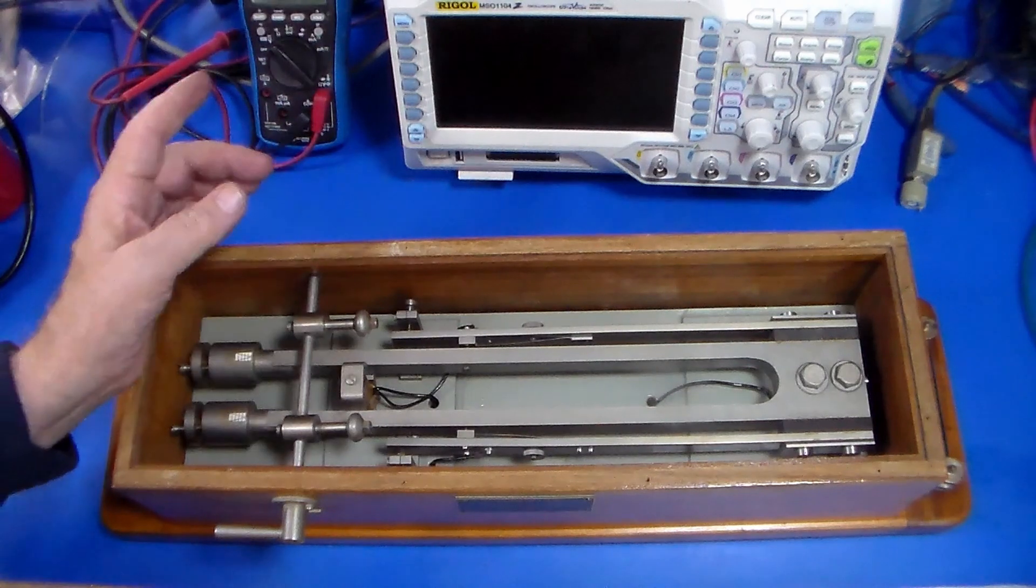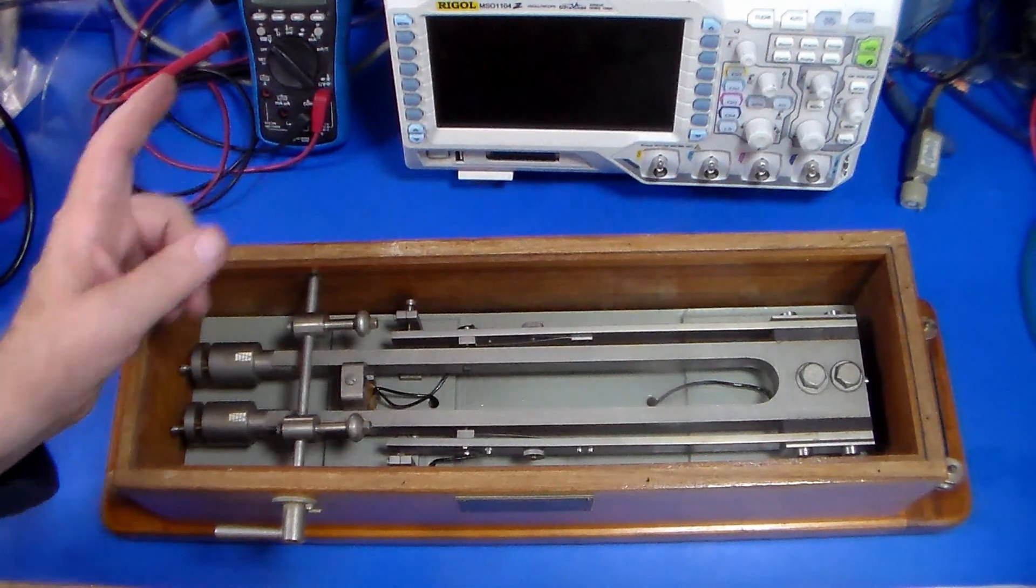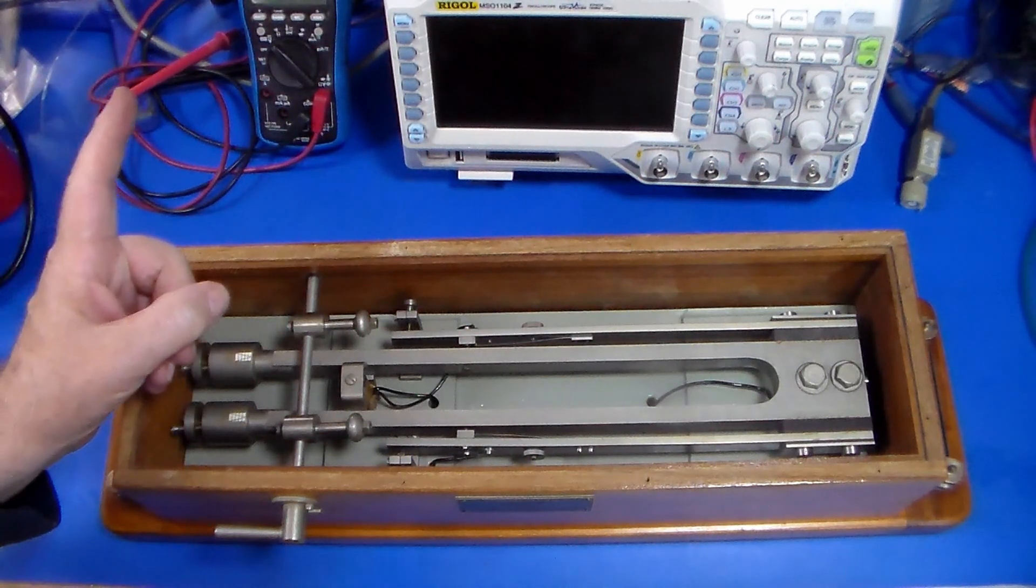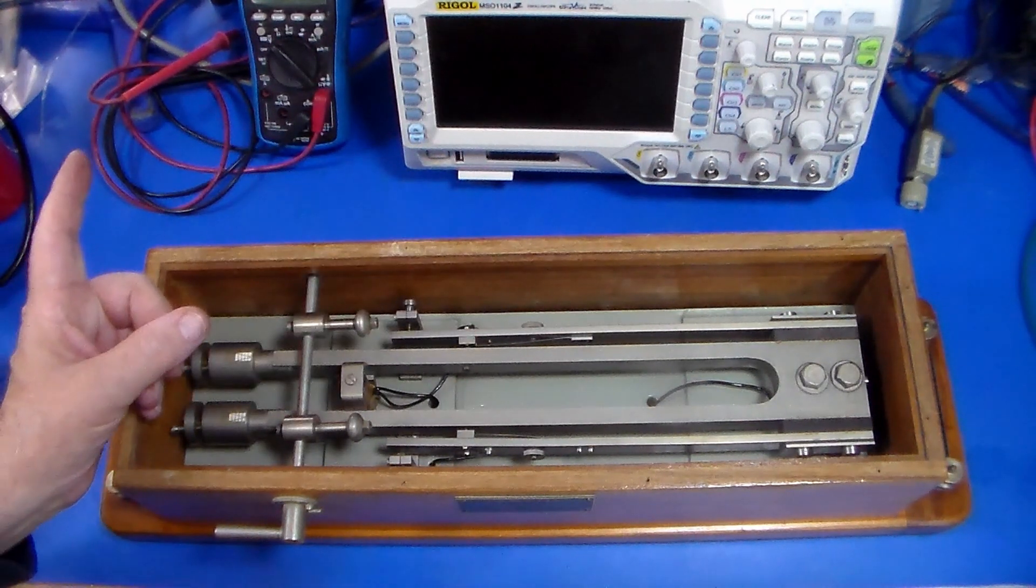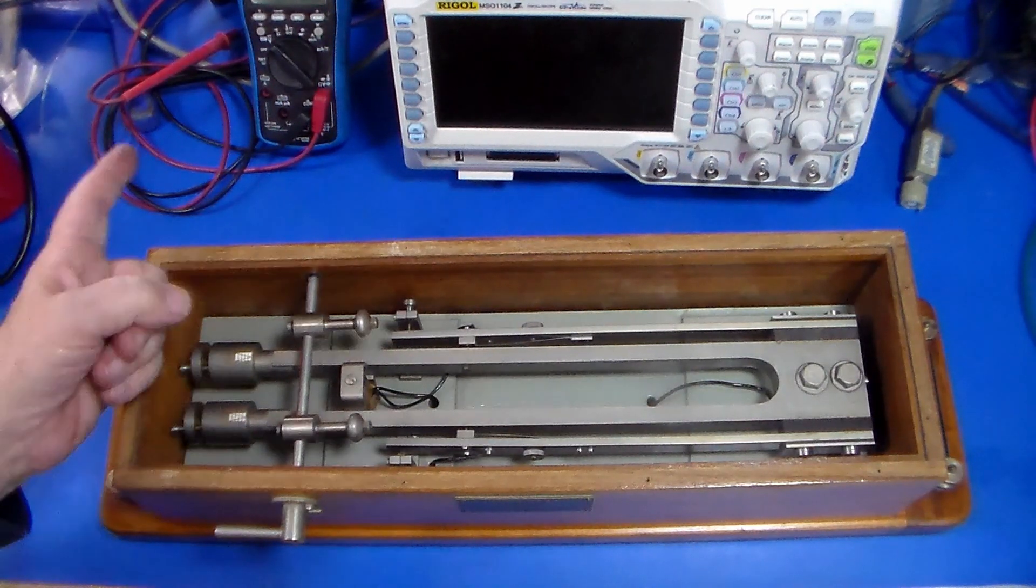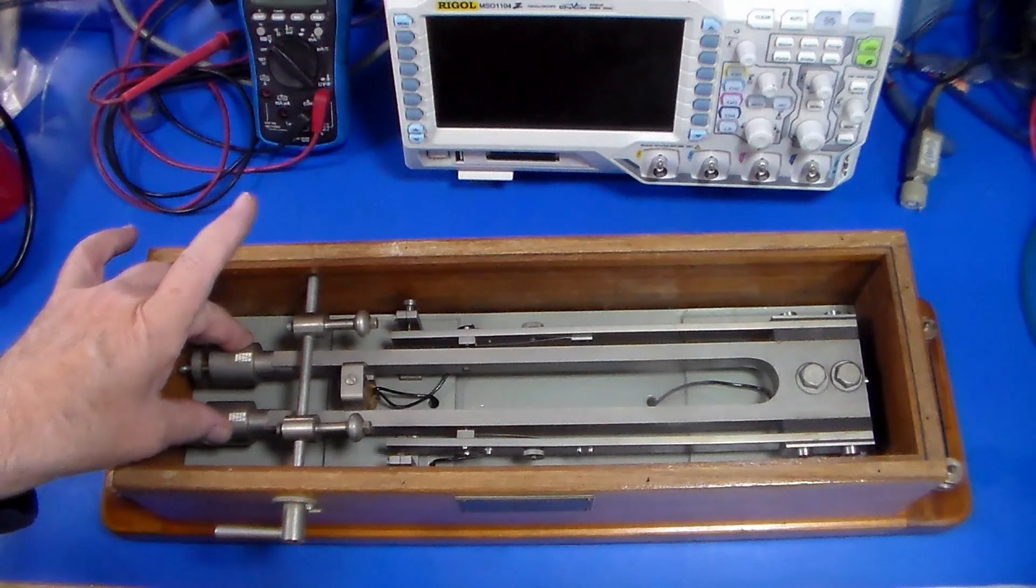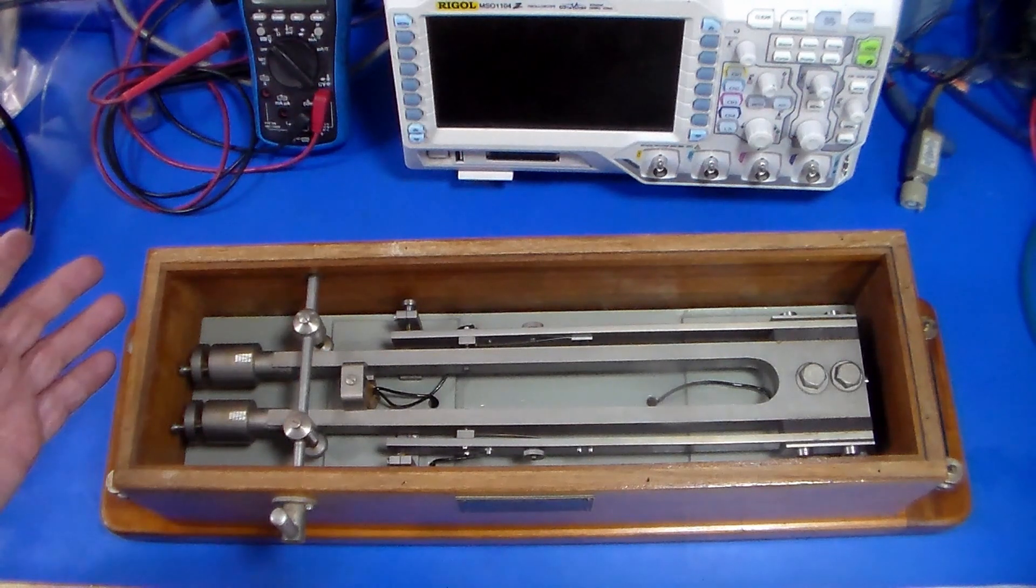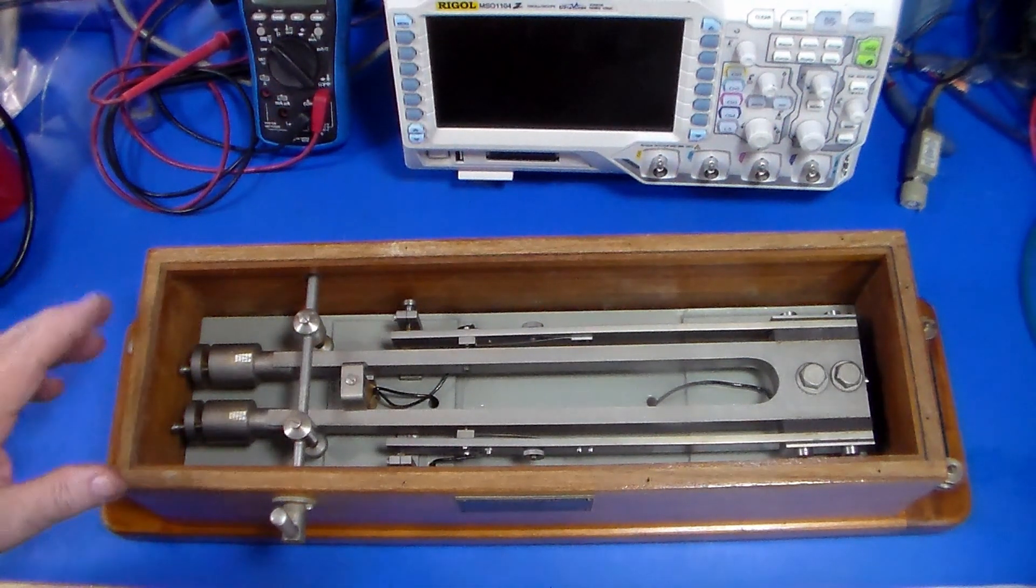Like an electric bell which has a clapper that when it hits the bell the contact here opens so that the field collapses and the clapper moves back, this in a similar way excites the fork. So what we'll do next is put some power under this and show you it operating.